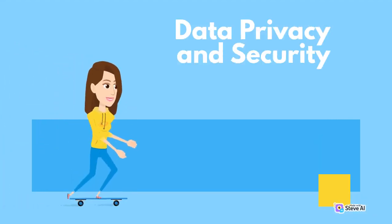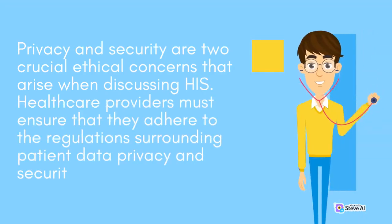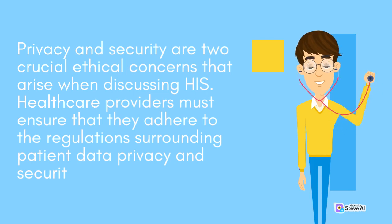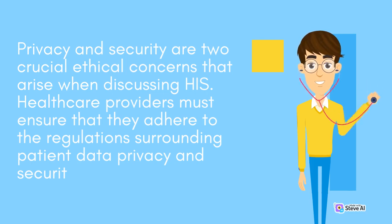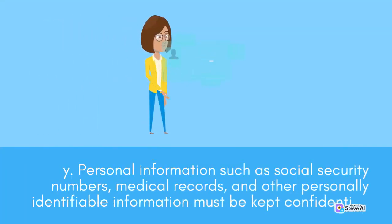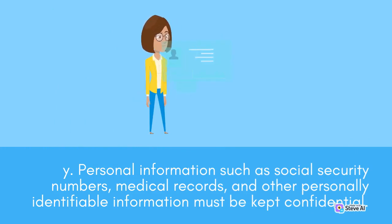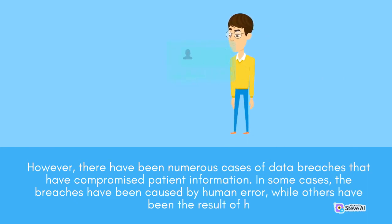Data Privacy and Security. Privacy and security are two crucial ethical concerns that arise when discussing information systems. Health care providers must ensure that they adhere to the regulations surrounding patient data privacy and secure it. Personal information such as social security numbers, medical records, and other personally identifiable information must be kept confidential. However, there have been numerous cases of data breaches that have compromised patient information.